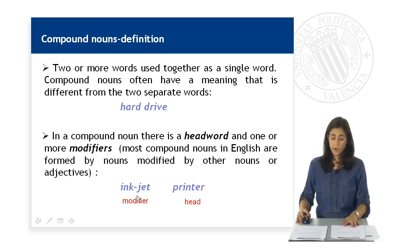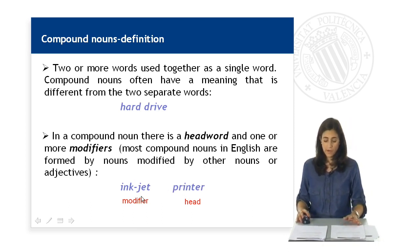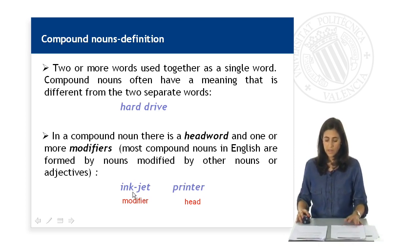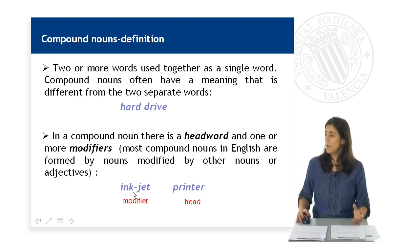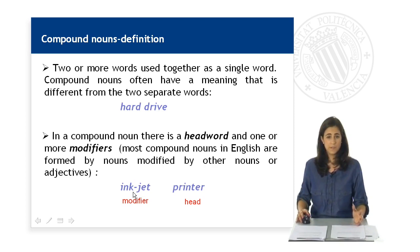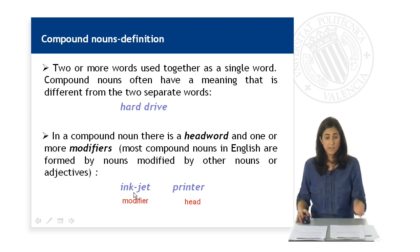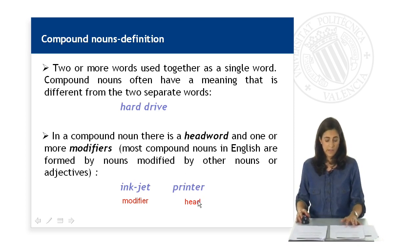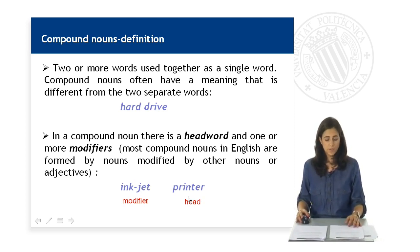The first word, the modifier, describes the second one, telling us what kind of object it is or what its purpose is. And the second part of the compound noun, the head, identifies the object or person in question.